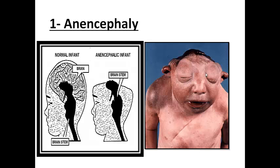Another important correlation to remember is that anencephaly is associated with a condition called polyhydramnios — a condition where there is excess amniotic fluid in the amniotic sac. The baby's amniotic fluid is made up of the baby's urine, and the baby needs to swallow and resorb some of it. In anencephaly, there is absence of a brain, meaning there is an absence of the swallowing center. So the baby cannot swallow the amniotic fluid, leading to increased amniotic fluid — polyhydramnios.